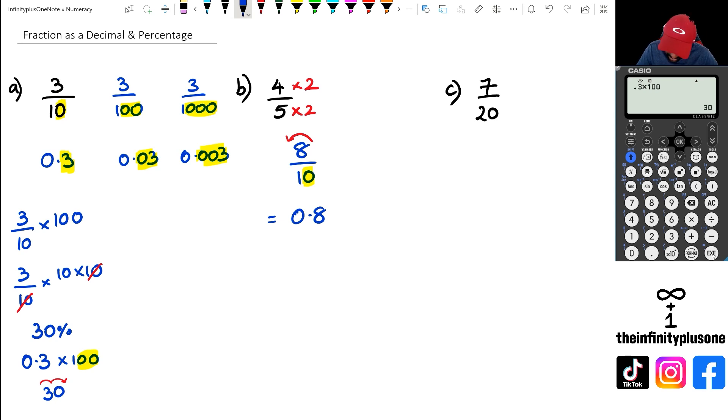Likewise, if I want to convert this 8 over 10 into a percentage, I'm going to say 8 over 10 multiplied by 100. And as you can see, it's pretty much the same thing as what we did in part A. We're going to get rid of that 100, replace it with a 10, get rid of the 10, and replace it with a 1. And so we've got 8 times 10 which equals to 80 percent. Of course with the calculator you can do the same thing: 0.8 multiplied by 100, and that's going to give you 80%.